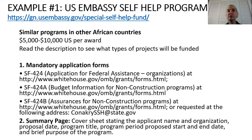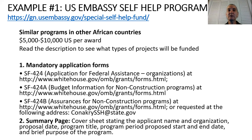Let's consider the first example: U.S. Embassy Self-Help Programs, particularly for the country of Guinea. The full description is available at the link shown. These proposals are rather involved, for a small amount of money — $5,000 to $10,000. You need to read the program description to find out what kinds of projects will be funded and what kinds will not.